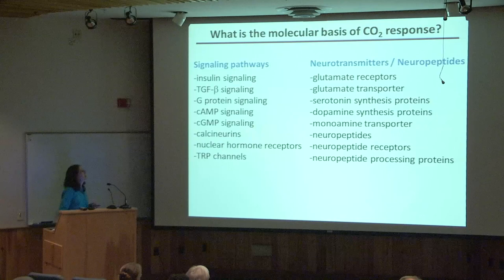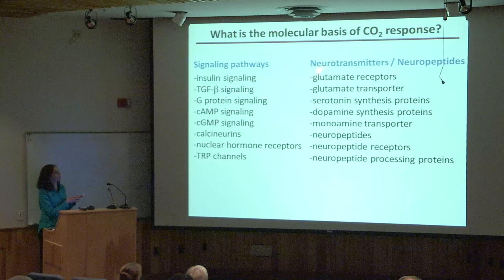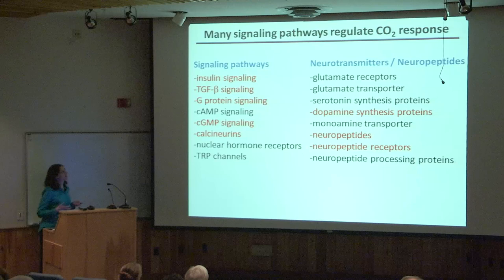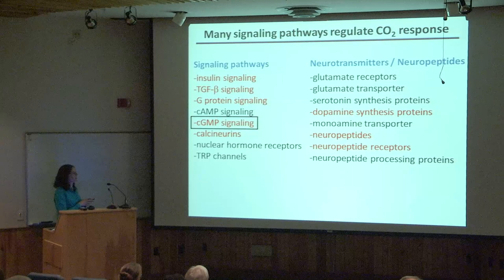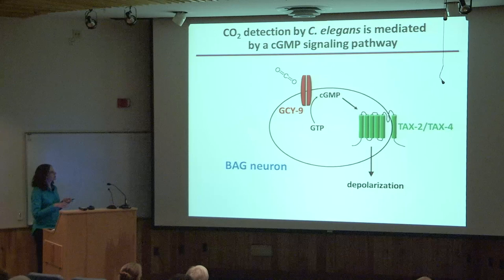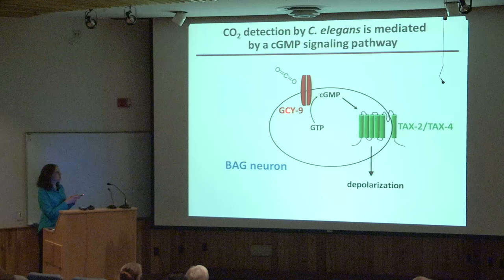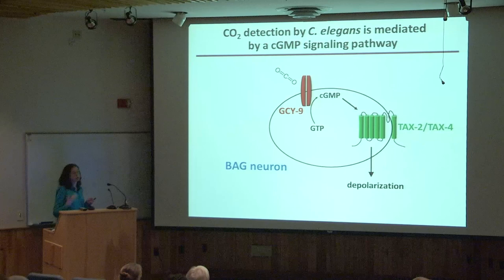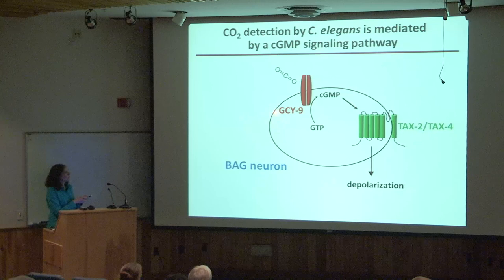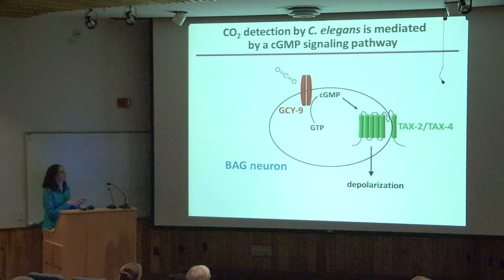To get at the molecular basis of CO2 response, we screened genes affecting various signaling pathways, neurotransmission, and neuropeptide signaling. We found that CO2 detection by BAG neurons requires a cGMP signaling pathway. Specifically, we identified a receptor guanylate cyclase called Gcy-9, which is required for CO2 response, is expressed specifically in BAG neurons, and is a putative receptor for CO2 or possibly a metabolite like bicarbonate. Gcy-9 acts upstream of a cGMP-gated cation channel called TAX-2/TAX-4. This cGMP signaling pathway mediates CO2 detection by BAG neurons.